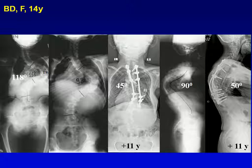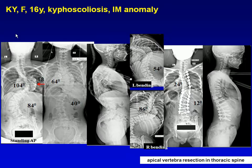Another case: a 14-year-old with very severe thoracic kyphoscoliosis — posterior vertebral column resection was done 11 years ago. In another case with very severe thoracic and lumbar curve, PVCR was done at the T9 level in the thoracic area.